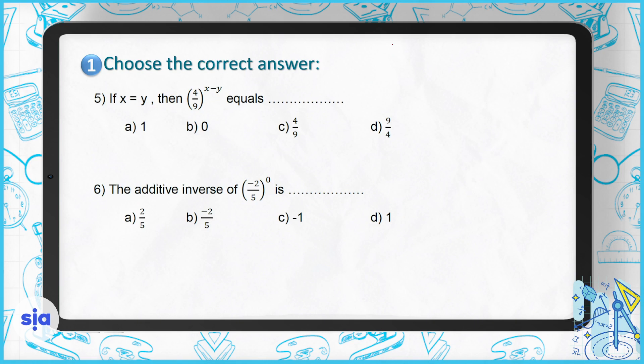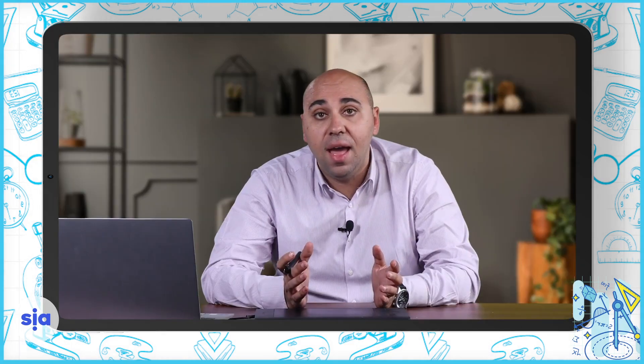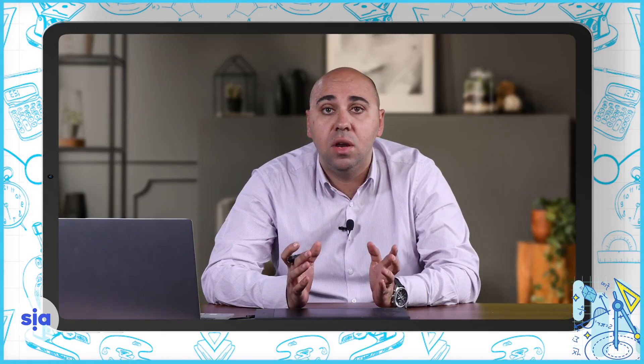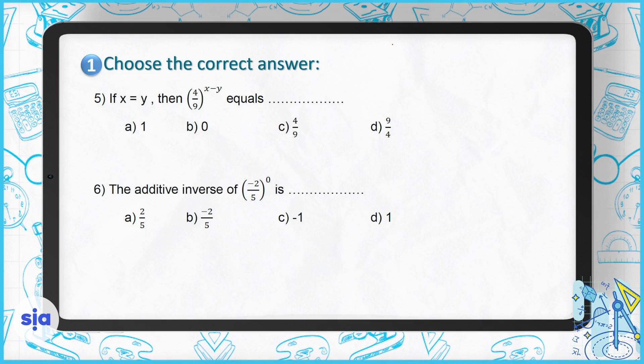Question 5: if x equals y, what is (4/9) to the power of (x minus y)? If any two numbers are equal, their difference is always zero — for example, 5 minus 5 equals 0. So the power is 0, and (4/9) to the power of 0 is always 1. The right answer is 1.